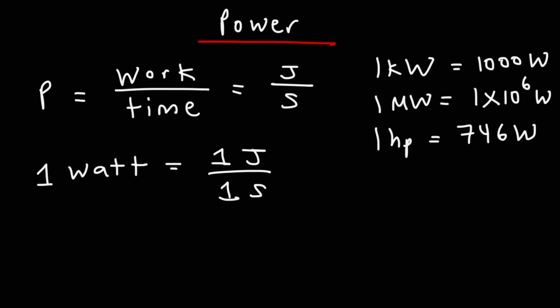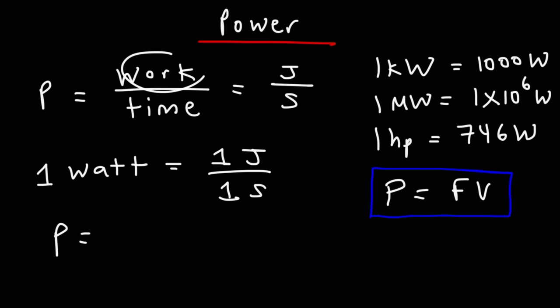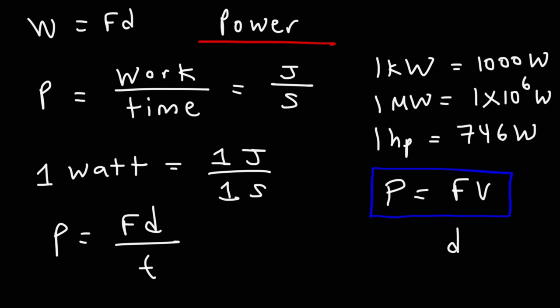An object that can do work in a short time exerts a lot of power. Work is in joules, time in seconds, and power is in watts. One watt equals one joule per second. A kilowatt equals 1,000 watts, a megawatt is one million watts (1×10⁶ watts), and one horsepower is 746 watts. Another equation for power is force times velocity. We can derive this from P = W/t: since work is force times displacement, P = Fd/t, and displacement over time equals velocity, so P = Fv.